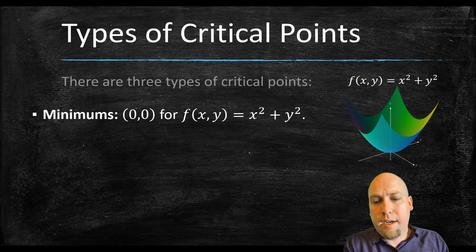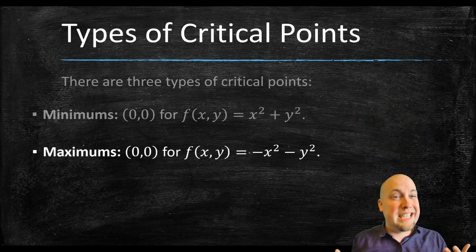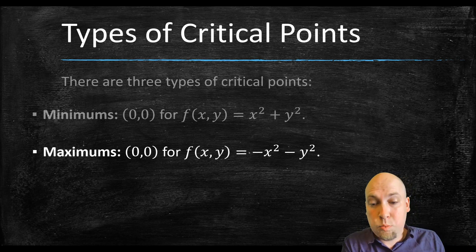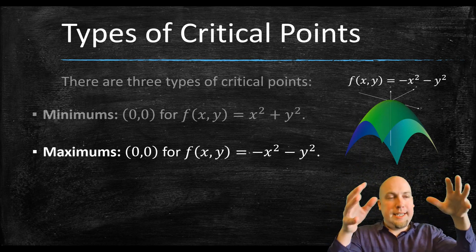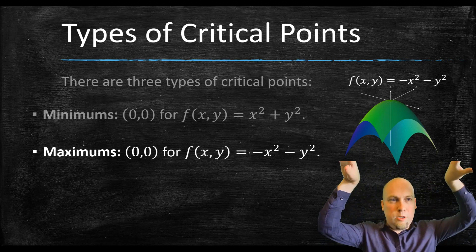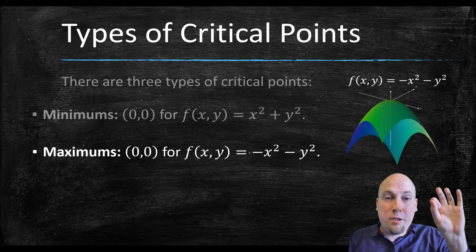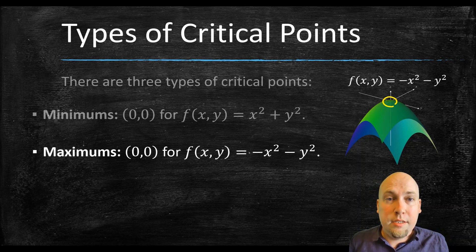There are other possibilities as well. Critical points can also be maximums. For example, if we stick a minus sign in front and consider f(x, y) = −x squared − y squared, that's just the upside-down paraboloid, opening to the bottom rather than opening up. This function again has a unique critical point at (0, 0), but this time that critical point is up at the top of the hill — it's a maximum.